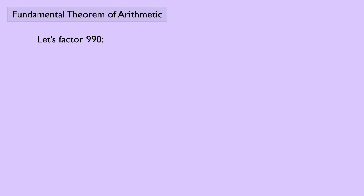Let's factor 990. 990 is definitely divisible by 2, and that would leave us with 495. And 495 is divisible by 5, and that would leave us with 99.